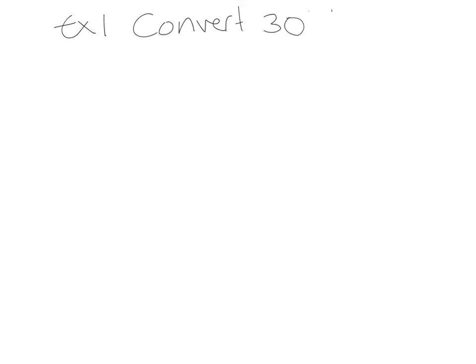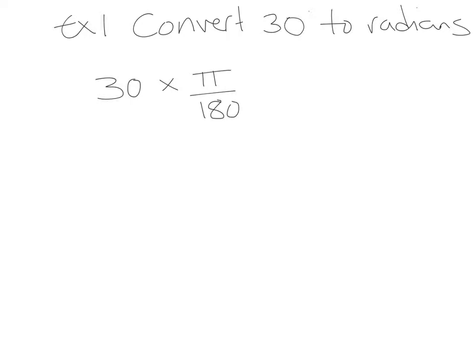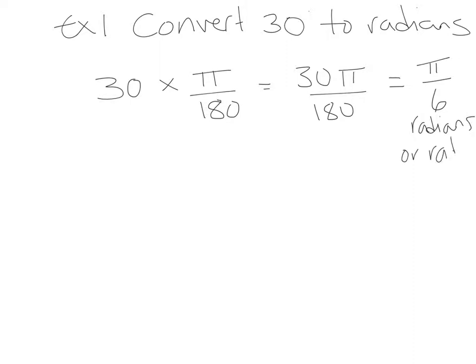Example 1: convert 30 degrees to radians. We take 30 and multiply by pi over 180, which gives us 30 pi over 180. We can simplify this fraction — 30 divides into both top and bottom — so we end up with pi over 6 radians, or rads for short.